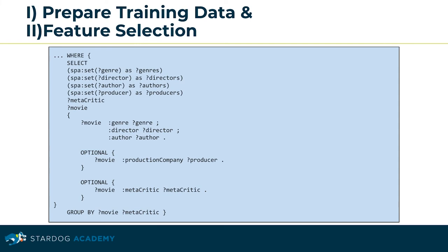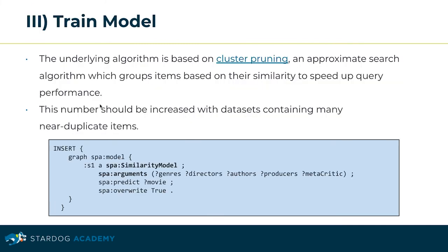Let's look into the code executable. For the feature selection in the WHERE clause, we choose a number of input features including genre, director, author, and producer, with some additional optional ones such as production company and metacritic. In the next step, we train our model with the classical INSERT query. We create a new model called S1 with class type spa:SimilarityModel, taking as arguments the variables of genres, directors, authors, producers, and metacritic.